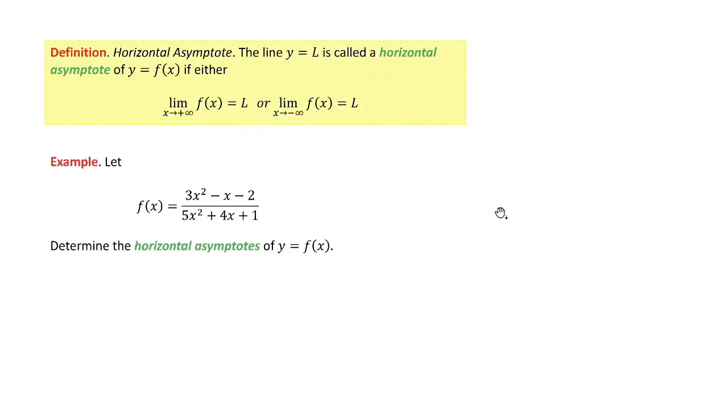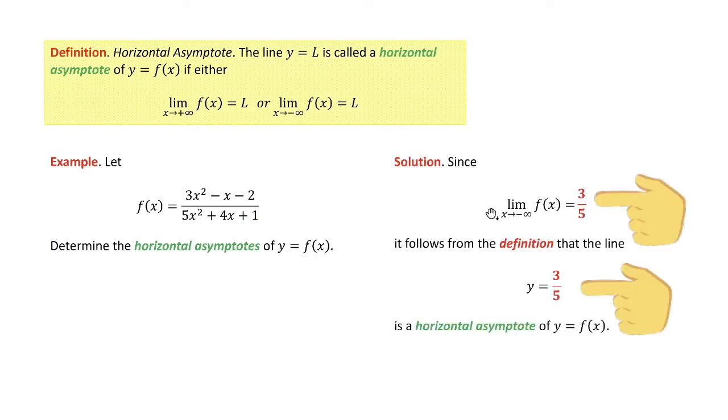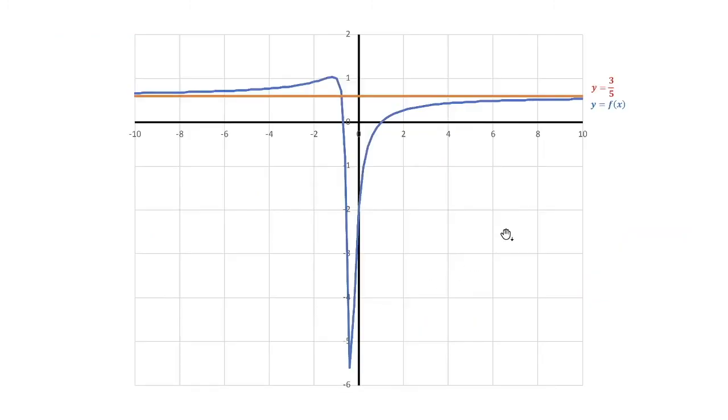The same example, determine the horizontal asymptote. Well, previously we found the limit is three fifths. So by definition, the asymptote is y equals three fifths. So that's the idea. It's interesting stuff. What does a horizontal asymptote tell you? Look at this picture.